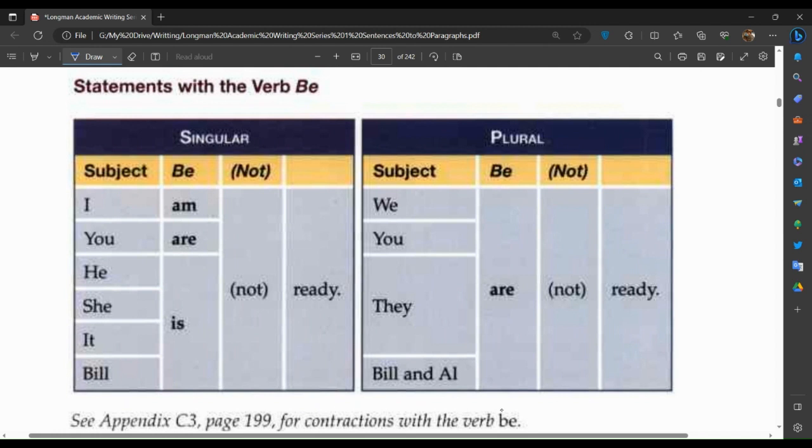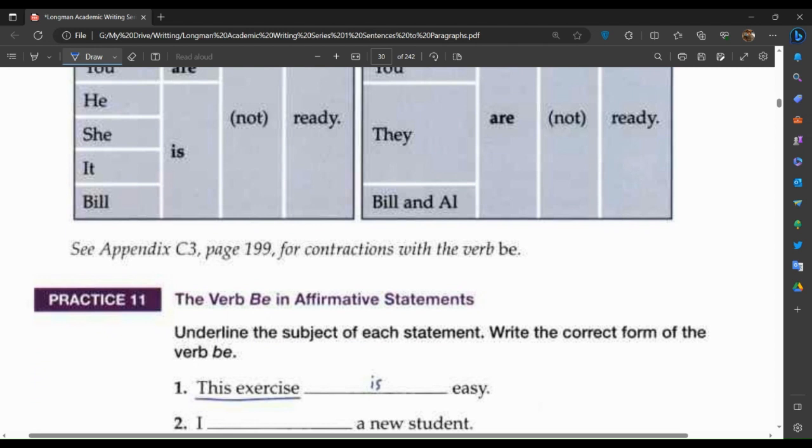Statements with the verb be. I am ready. You are ready. He is ready. She is ready. It is ready. Bill is ready. You are not ready. It is not ready. We are not ready. You are not ready. Bill and I are not ready.